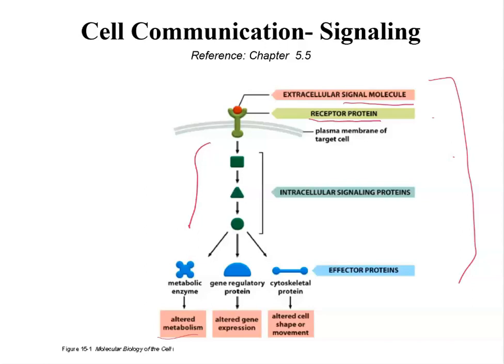We're going to be looking at phosphorylation of proteins, and these proteins are going to affect effector proteins. This is where we're looking at cellular response — a number of different events can happen in the cell.